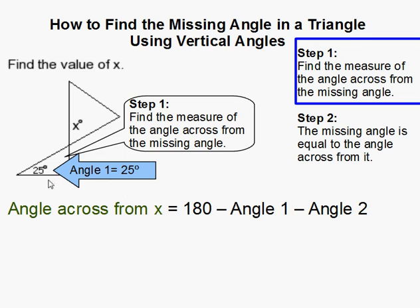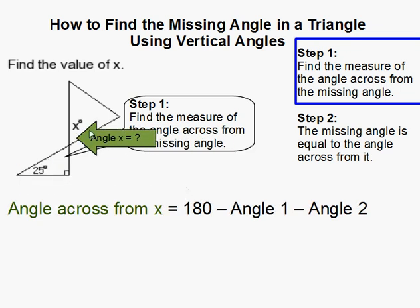So I'm given this angle is 25 degrees and this angle is 90 degrees. It doesn't say it explicitly but it does give us the right angle sign so that tells me it's 90 degrees. And this is our angle that we're looking for.